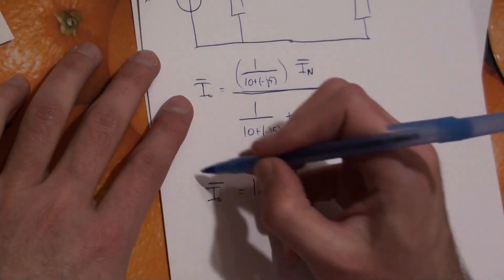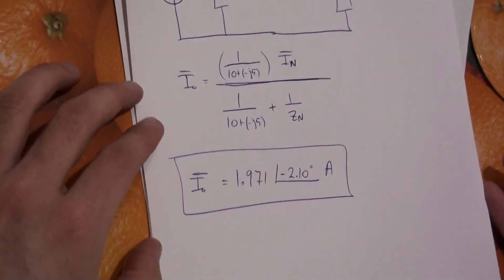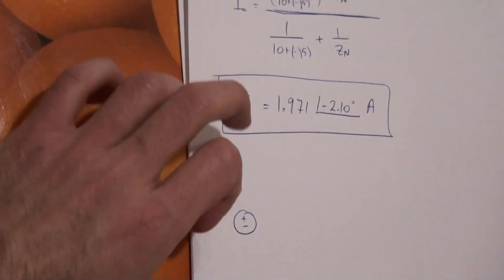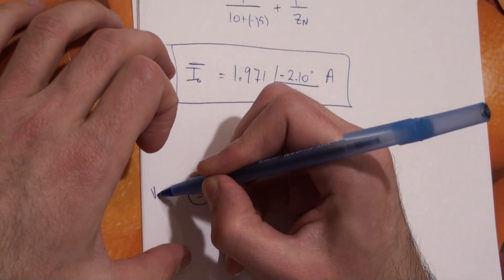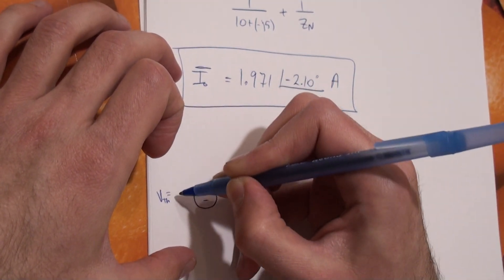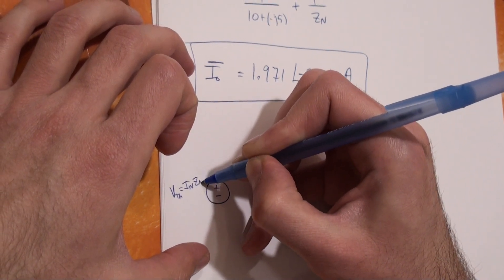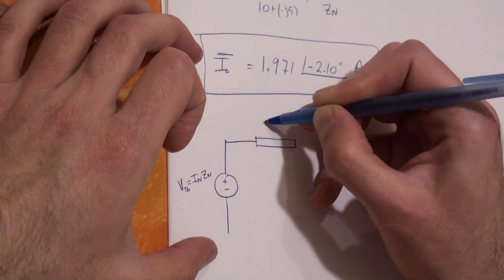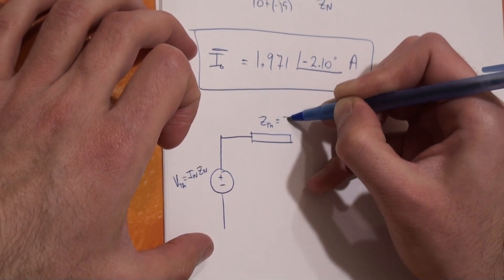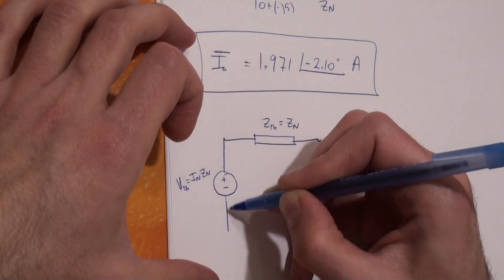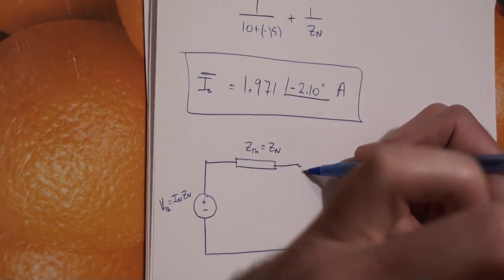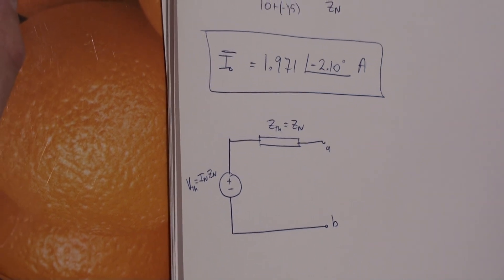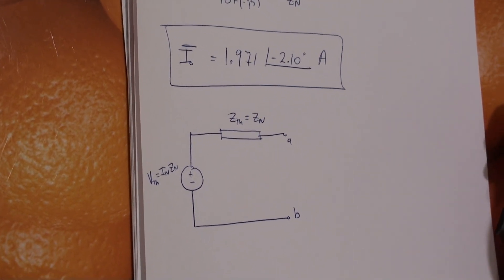If you wanted the Thevenin equivalent, V Thevenin equals I Norton times Z Norton, and Z Thevenin equals Z Norton — they are the same. That concludes the solution to practice problem 10.10.